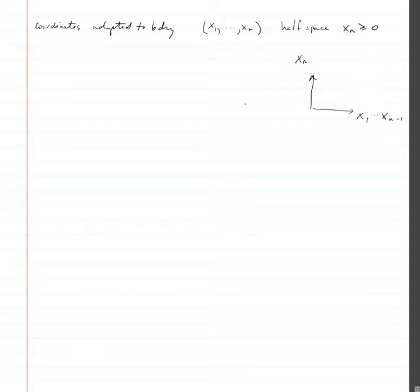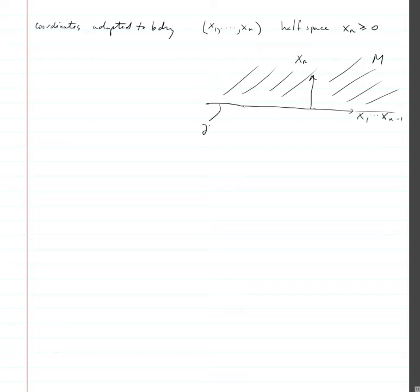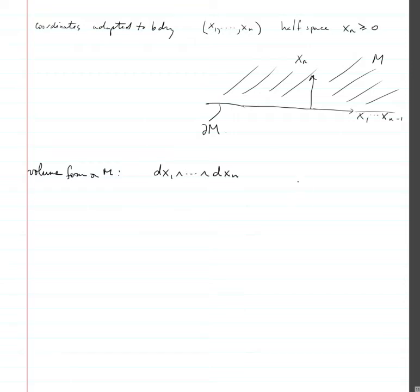So the manifold with boundary is going to look like this, and this here is the boundary of m. A volume form on m — the standard one — would be dx1 ∧ dx2 ∧ ... ∧ dxn. This would be an n-form on m.